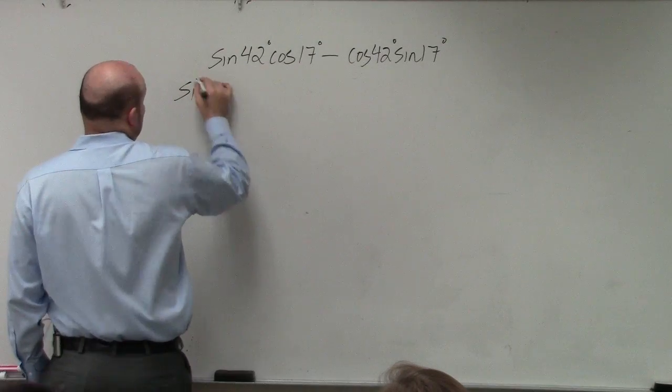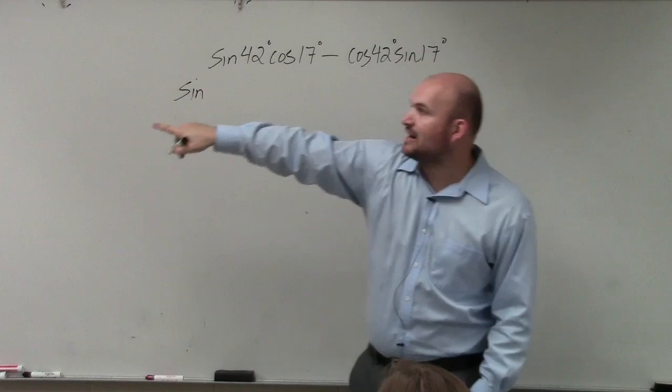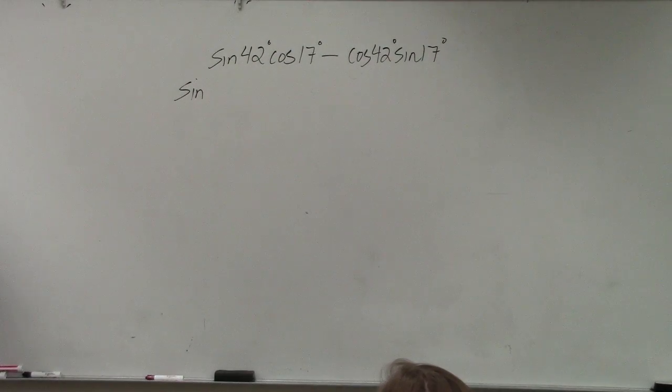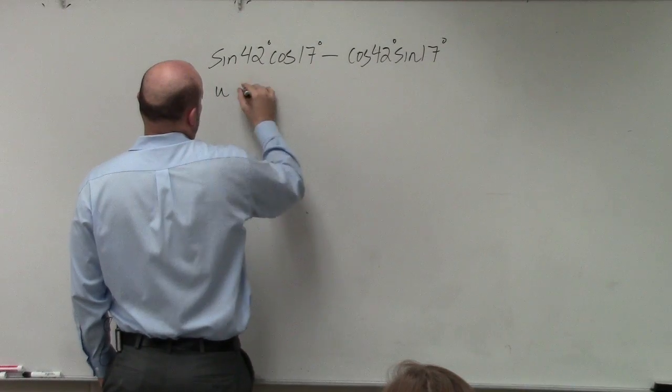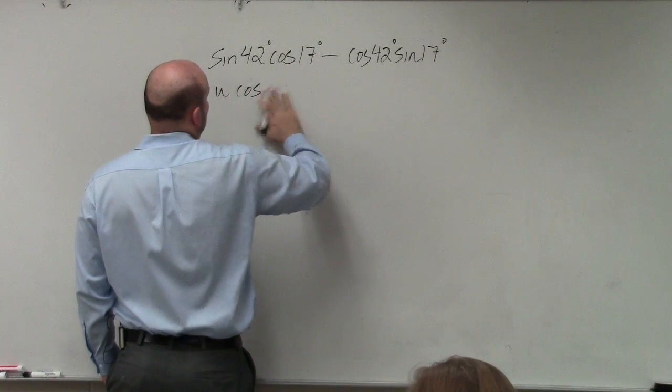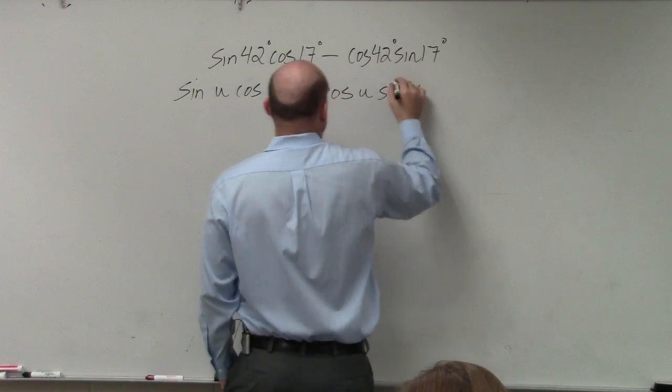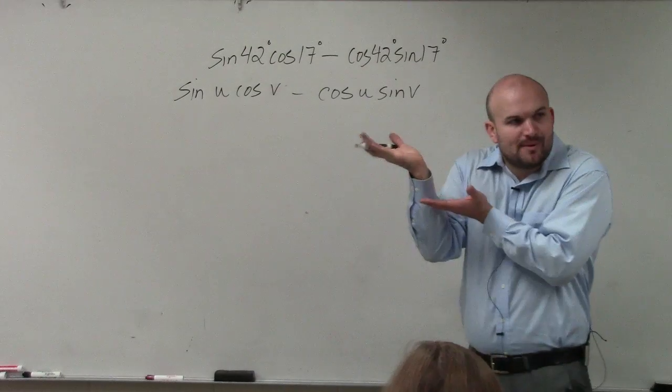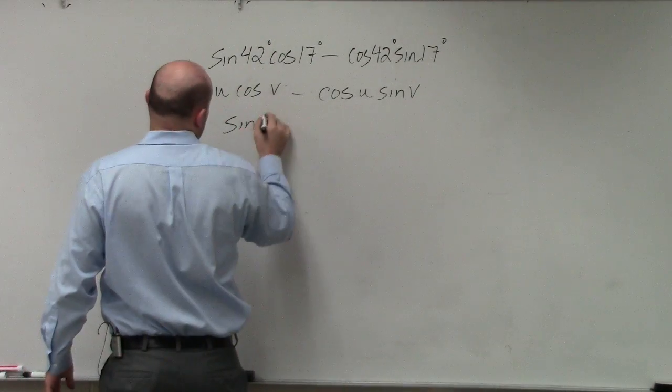So it's sine. Now you look at the sign between them is subtraction. So when I look at the sine when it's subtraction, that means it's the subtraction of the two angles. So it's sine of u times cosine of v minus cosine of u times the sine of v. Well, what does that formula represent? That represents the difference of two angles for sine.